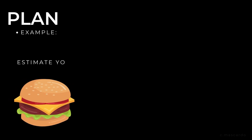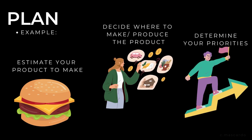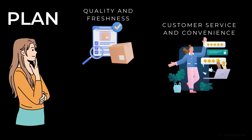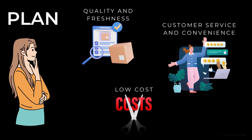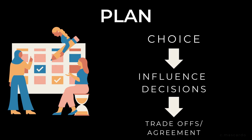Example for planning: You need to estimate how many hamburgers you are going to make, decide where you are going to make them, and determine what your supply chain priorities are. You may need to choose whether to focus on quality and freshness, customer service and convenience, or low cost. These choices will influence the other decisions and trade-offs that you make throughout the supply chain.